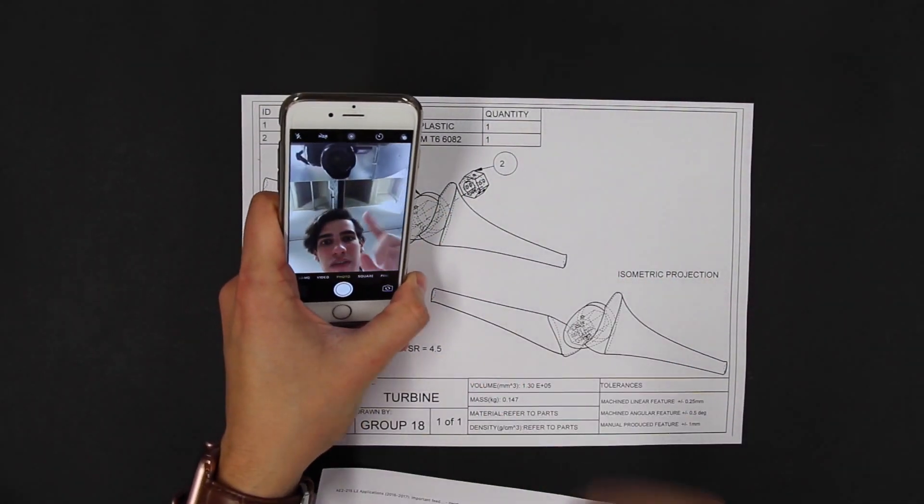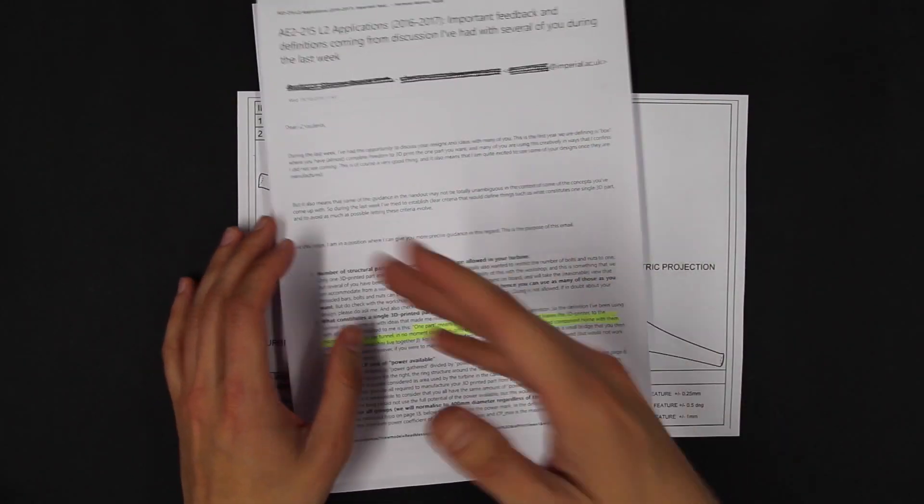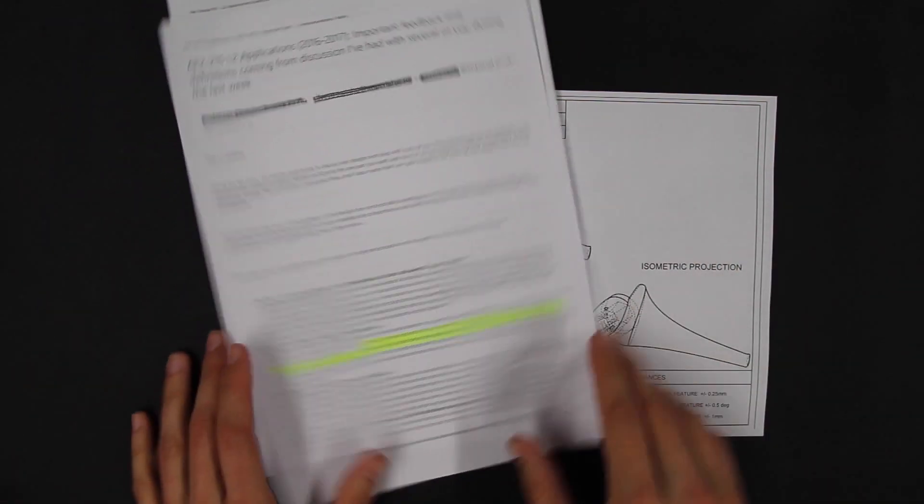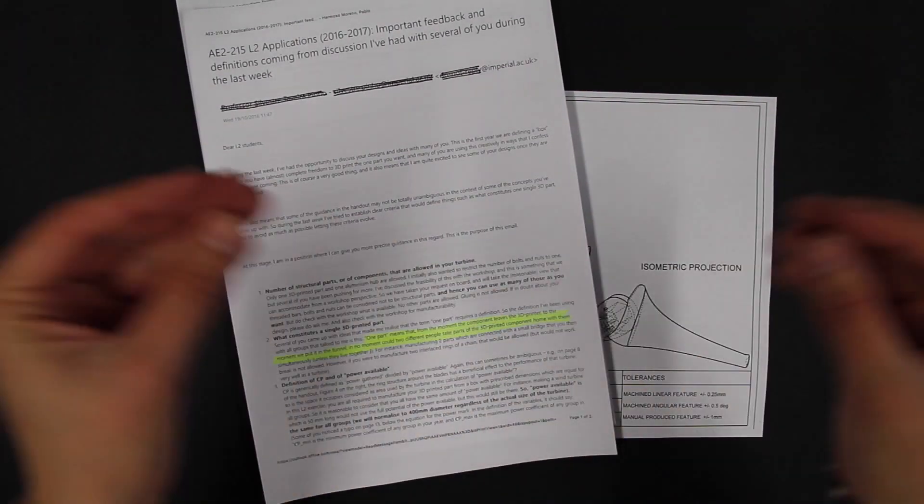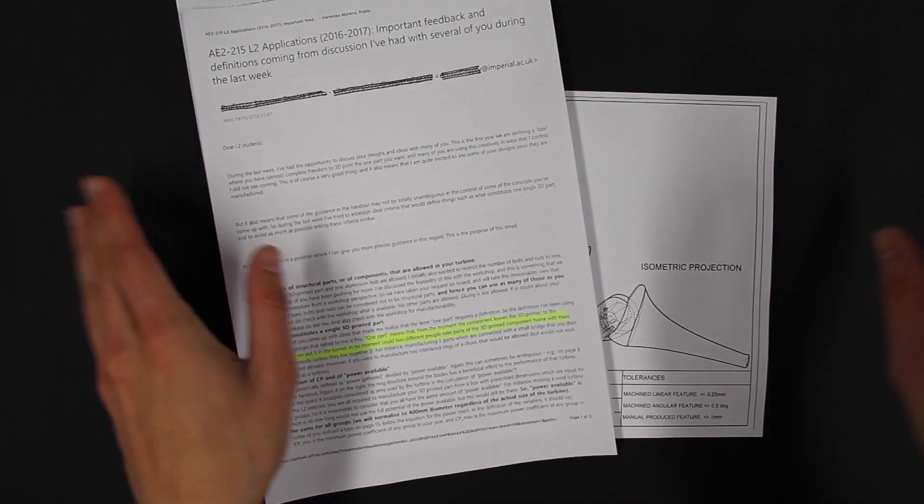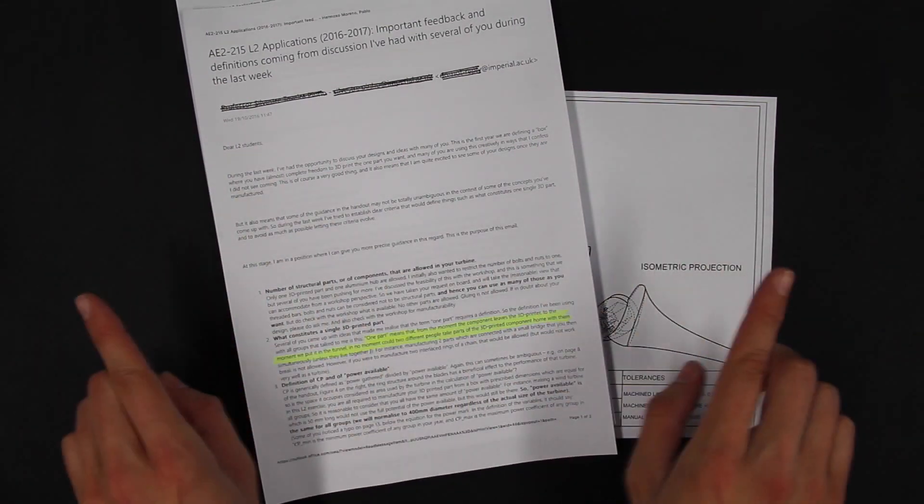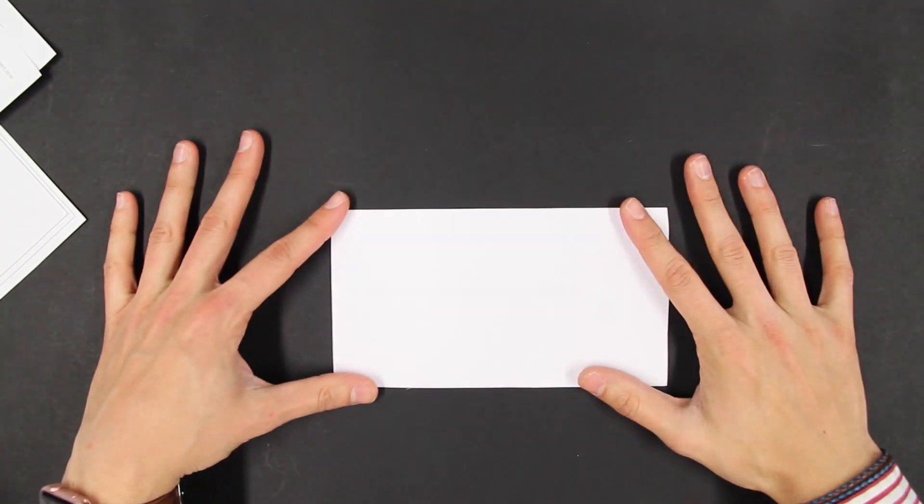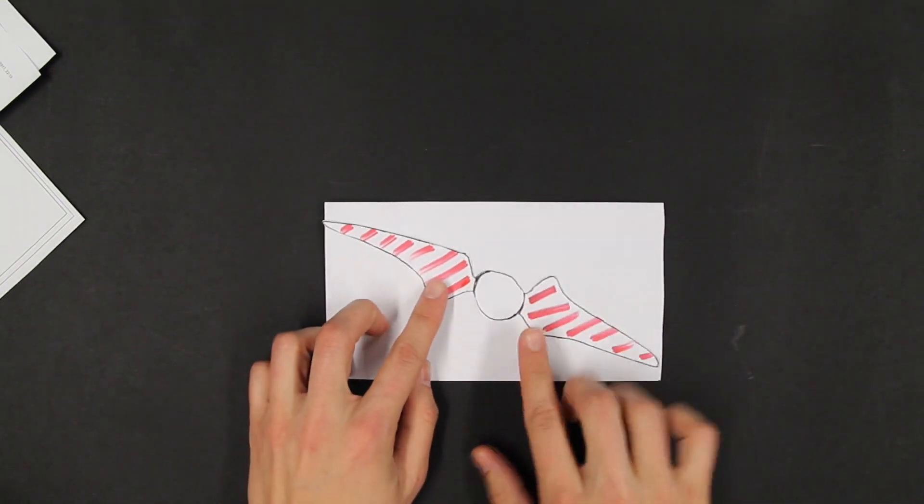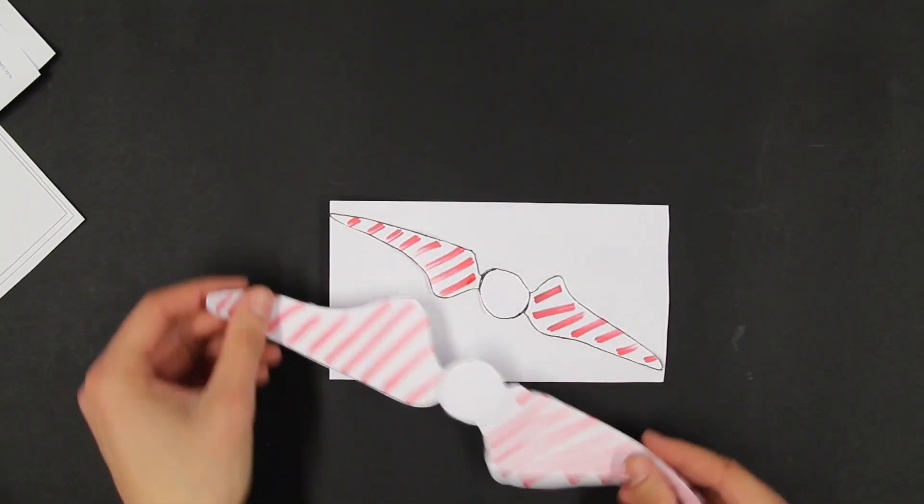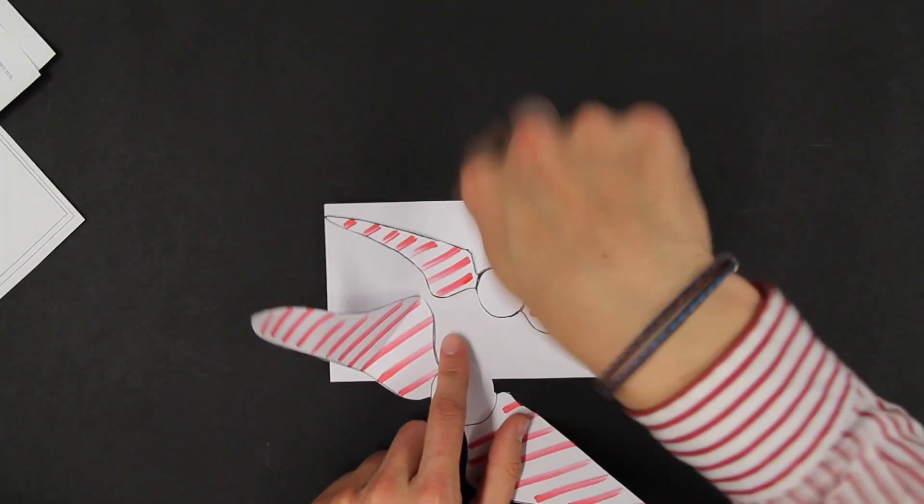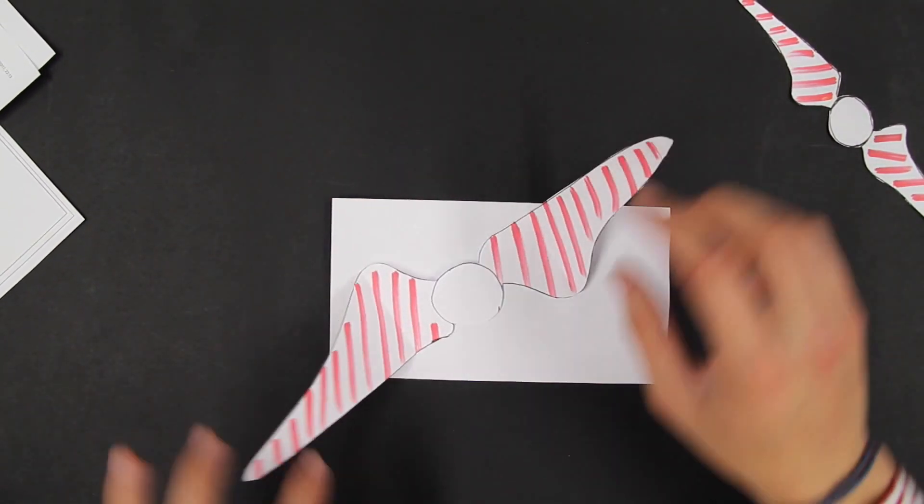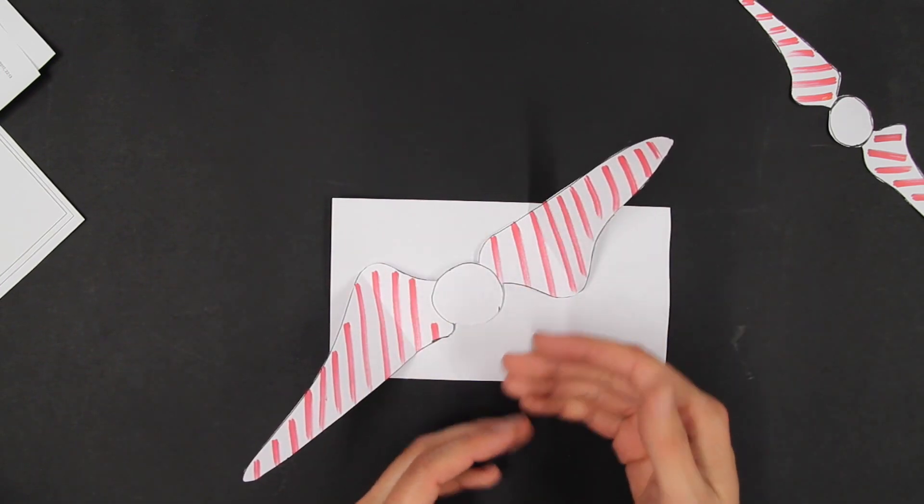Then, real stuff happened. We received an email from our coordinator in which it was stated that the constraint of one single 3D printed part actually means that from the moment the component leaves the 3D printer to the moment we put in the wind tunnel, in no moment could two different people take parts of the 3D printed component home with them. It changed the rules of the game. This is the available area of the 3D printer. And that was our initial design. So, we thought bigger blades covering more surface we could extract more power out of the same flow. The trick here is then somehow fit our design inside the 3D printer box and take advantage of the new situation.